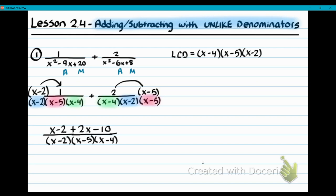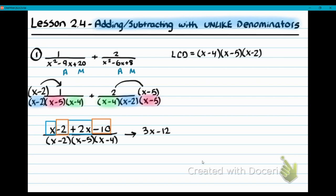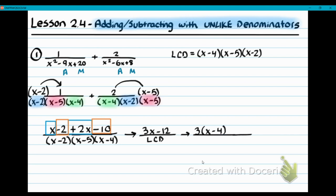Your next step is to combine like terms in the numerator. A trick to save writing: since you already wrote the LCD, you can just write 'LCD' for the denominator and plug in the actual LCD at the end. We combine X plus 2X and negative 2 minus 10. X plus 2X is 3X, and negative 2 minus 10 is minus 12, over LCD. Your next step is to factor the numerator if you can. Factor out a GCF of 3, leaving 3 times (X minus 4), and now plug in the actual LCD.